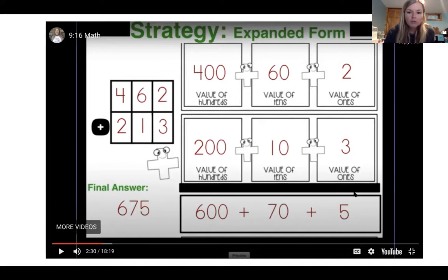Then we write that grand answer again, that final total in expanded form. When we add it together, we know that 600 plus 70 plus 5 is equal to 675. So we stick with the expanded form the whole way. Here's my 462 written out in expanded form, and there's my 213 again written out in expanded form. It makes it really easy to go through and add.